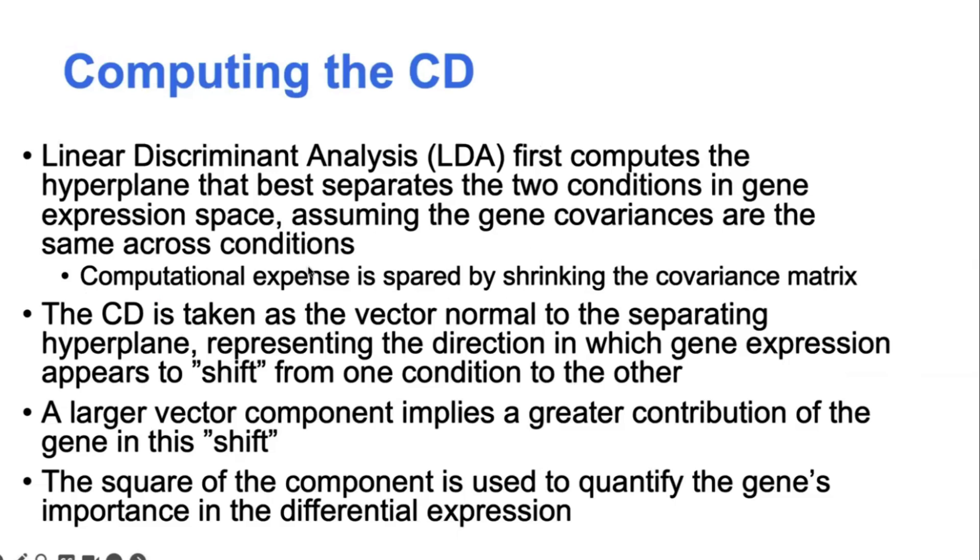and what we use is the square of the component to quantify the contribution of the gene towards the differential expression. So essentially a larger vector component is interpreted as a stronger shift in the direction of that gene. And that implies a greater change in expression from one condition to the other.